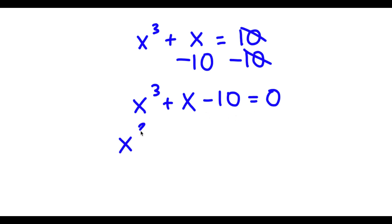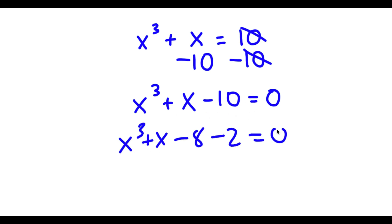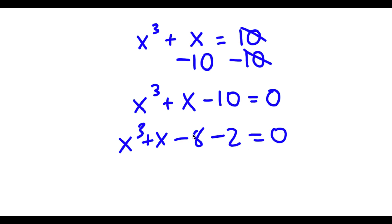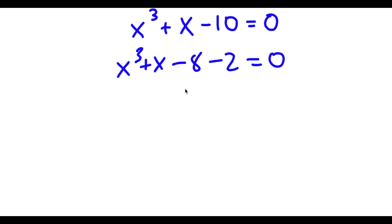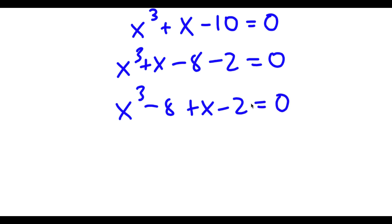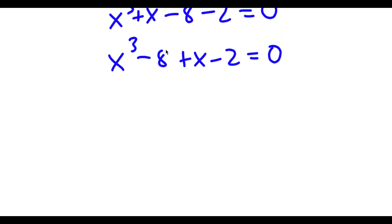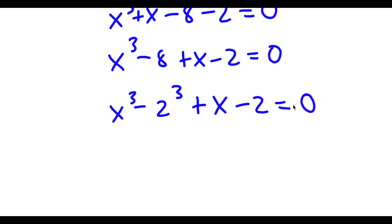Now negative 10 is the same thing as negative 8 minus 2. So now I'm going to switch the order of these and rewrite this as x to the power of 3 minus 8 plus x minus 2 is equal to 0. Now 8 is the same thing as 2 to the power of 3, so now I have x to the power of 3 minus 2 to the power of 3 plus x minus 2 is equal to 0.